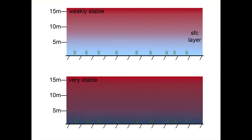On nights with partial or full cloudiness or sufficient wind speed, the depth of the boundary layer and influence of surface radiative cooling may extend upward to 100 meters or more through turbulent mixing. That is, the boundary layer depth may be 100 meters deep or more.